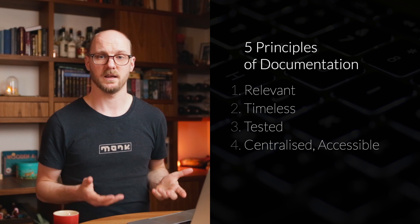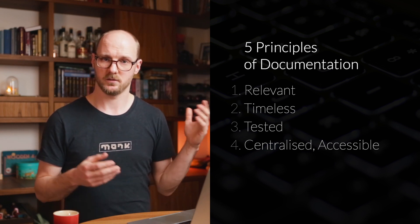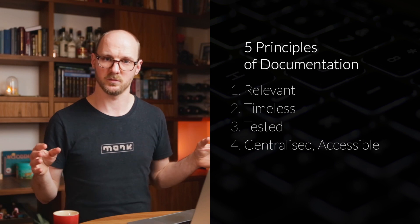Good documentation is also centralized and accessible. It should have a single location. Documentation shouldn't be scattered across multiple systems. Everybody should know this is the system — the webpage, the Git repository, the Confluence system, or whatever you use. There should be just one, because then everybody can go to that one place and find what they're looking for. It should also be accessible by everybody by default — anybody should be able to read this documentation. The more easy it is to access, the more likely it is to be helpful, and that is the purpose of documentation.